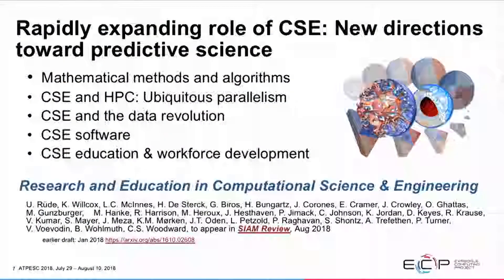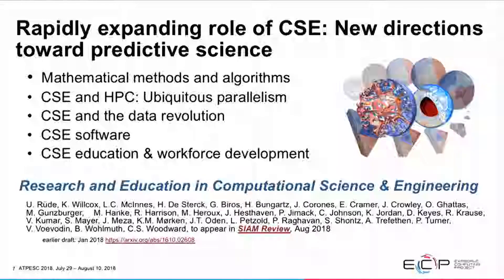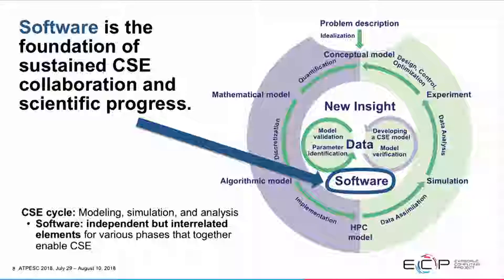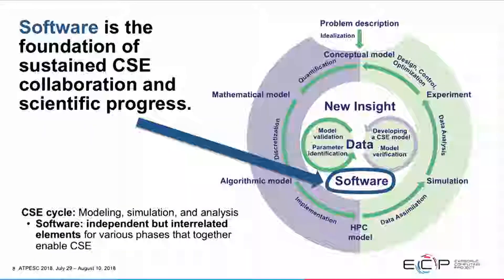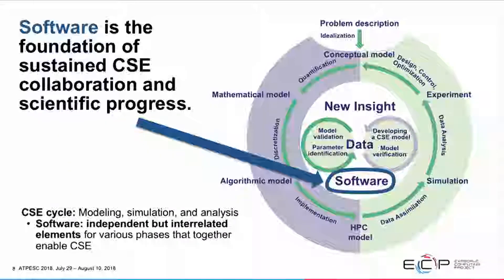Software is the key. This is a loop we'll talk about more today: you start with a problem description — what's the physics you're trying to model, what's the idealization of that, how do you create a mathematical model? Turn that into an algorithmic model through discretization techniques, implement that algorithm on a high-performance computing machine with heterogeneous node architectures, do the simulation analysis, and continue around that circle for increasingly stronger interpretive simulation. You can develop new insights through data analysis for model validation and verification, and increasingly add things to this loop that take us more from interpretation to prediction.